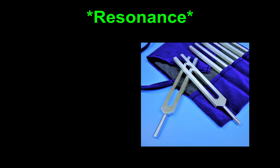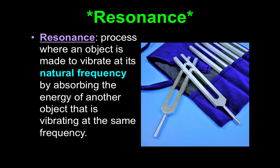Resonance — this was also a station. You had tuning forks; it was the last station, station six. Resonance is a process where an object is made to vibrate at its natural frequency by absorbing energy from another object that's vibrating — but they have to be at the same frequency. So you had two tuning forks at the same frequency, you struck one and let it vibrate for a bit, then stopped it — and you could still hear the one you didn't strike vibrating because it had transferred its energy to that fork. If you did it correctly, the unstruck fork kept vibrating after you stopped the struck one. That is resonance.